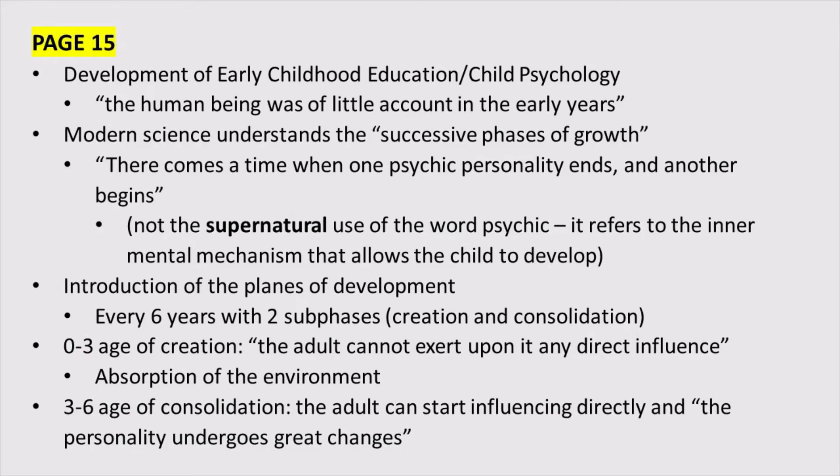Now in the three-to-six age group, there's that sub-phase of consolidation and things start to change. She says the adult can start influencing directly, and the personality undergoes great changes. If you're a parent or educator thinking about the first six years of life, you can think about what a child is like during those first three years versus the ages of three to six. It's one plane of development according to Maria Montessori, but you can really start to see that difference at age three.